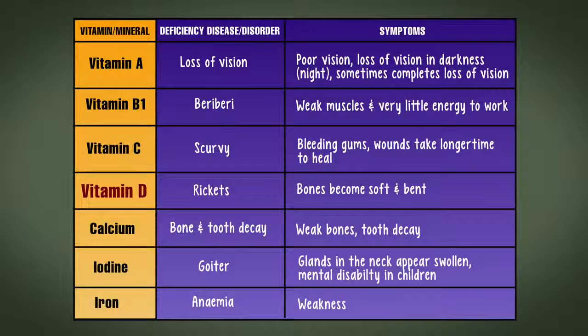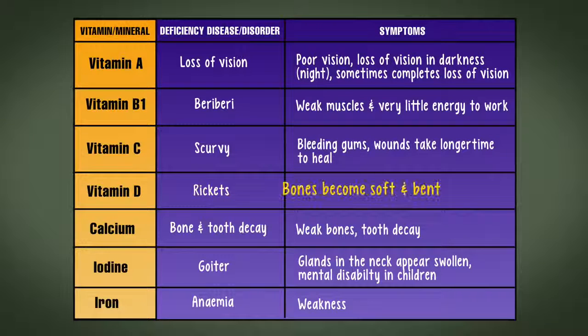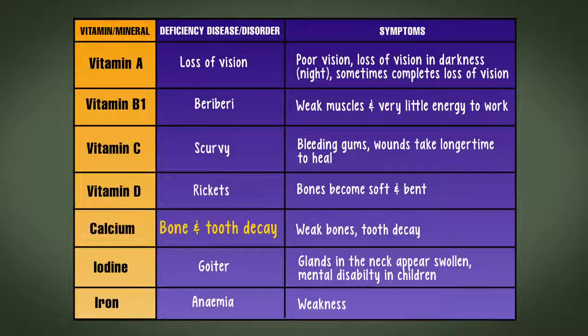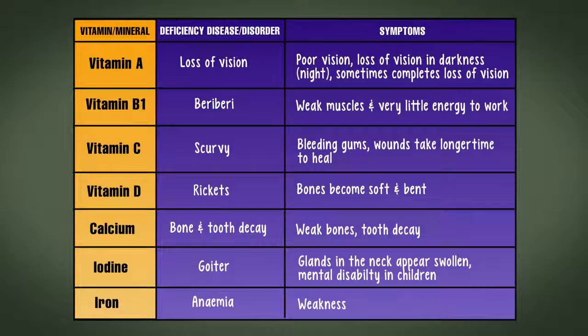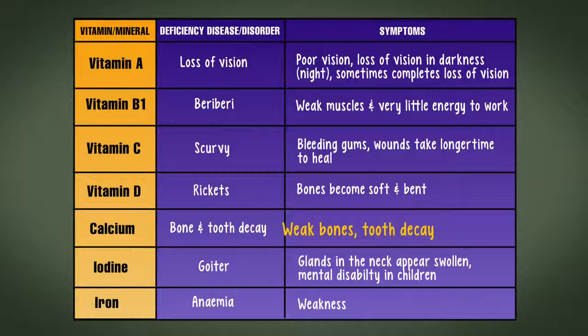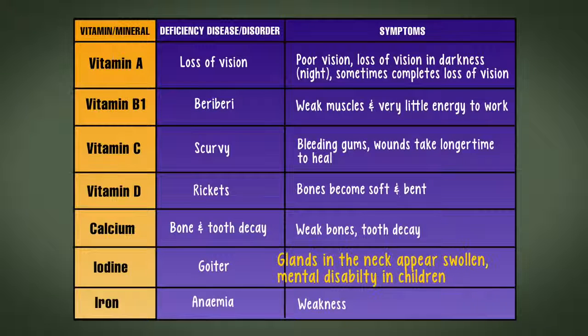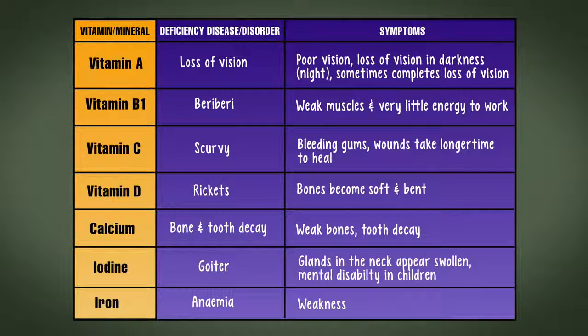Vitamin D: Rickets - bones become soft and bent. Calcium: Bone and tooth decay - weak bones, tooth decay. Iodine: Goiter - glands in the neck appear swollen, mental disability in children. Iron: Anemia - weakness.